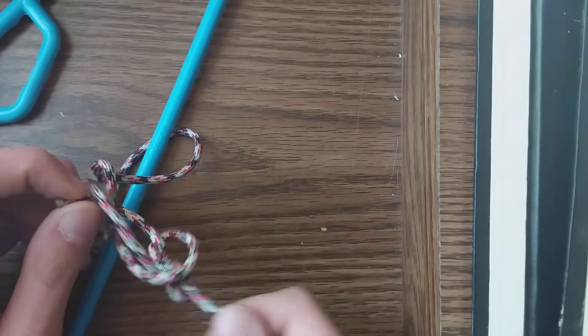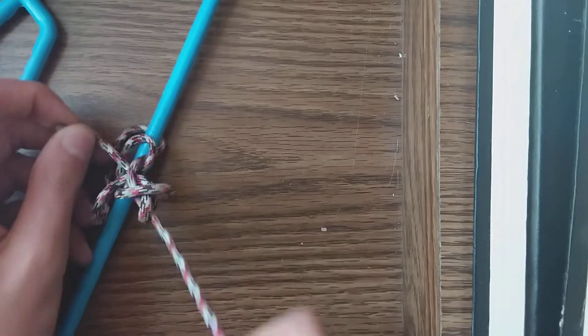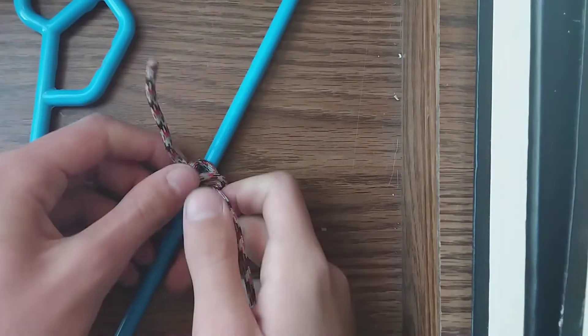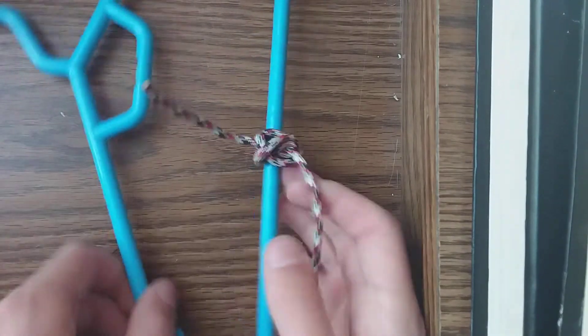And so you should have this jumble of a mess. Pull to get the taut line hitch.